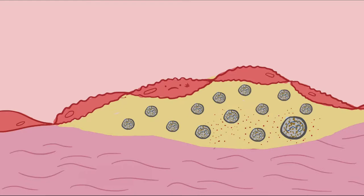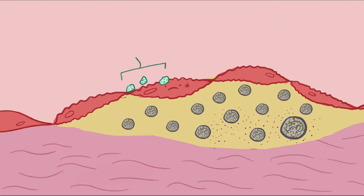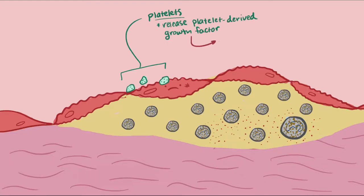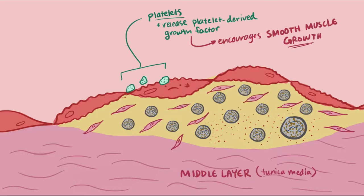As more and more foam cells build up, they form a lesion called a fatty streak. The fatty streak is thrombogenic, meaning that blood can clot on it. Platelets begin to gather at the damaged endothelium and release platelet-derived growth factor, which encourages the growth of smooth muscle cells. Normally smooth muscle cells stay within the middle layer of the blood vessel, the tunica media, but the release of platelet-derived growth factor draws them to the tunica intima, where they multiply.